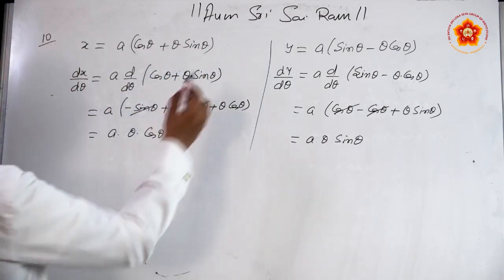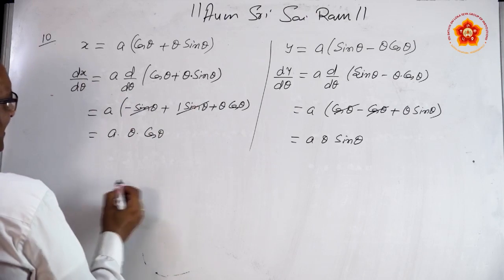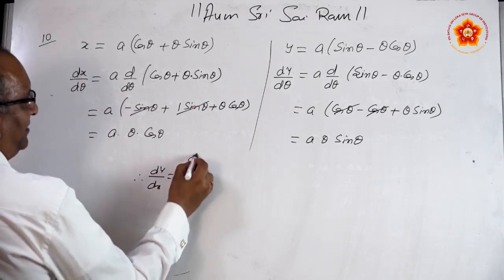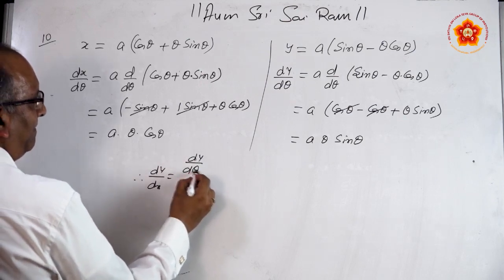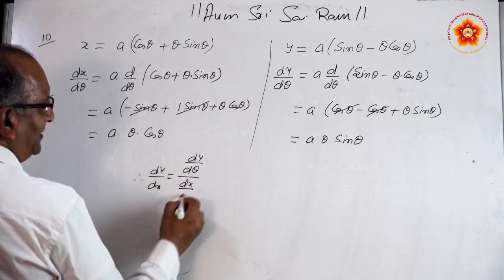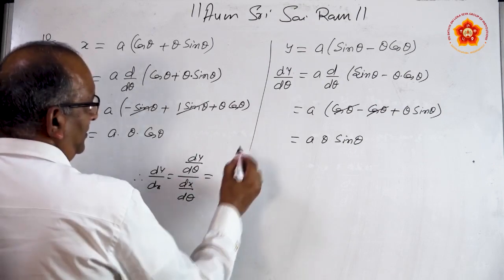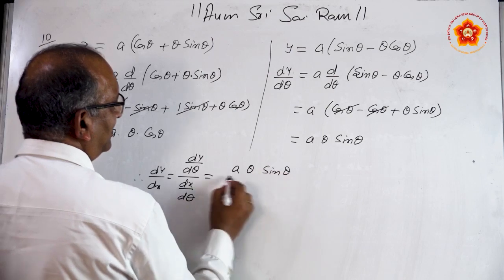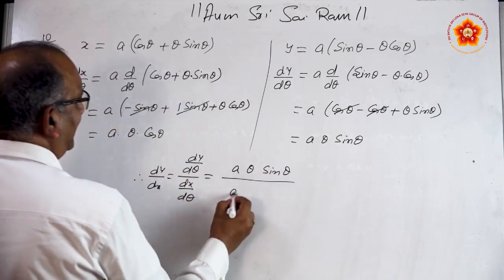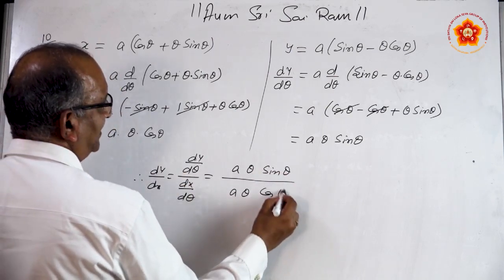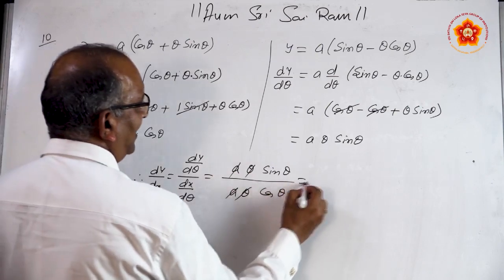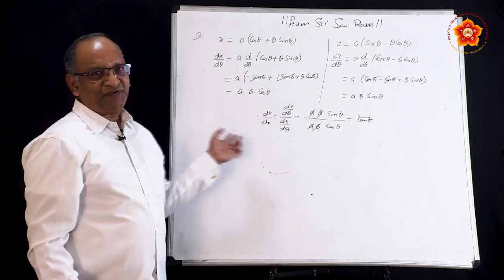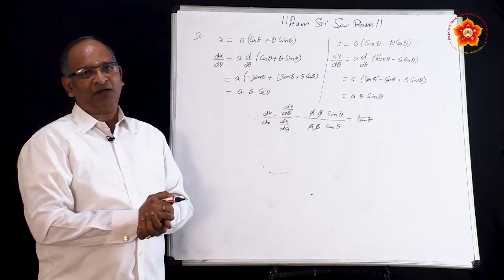We found dy/dθ and dx/dθ. Hence, dy/dx equals dy/dθ divided by dx/dθ. Substituting: it is a·θ·sin θ divided by a·θ·cos θ. A cancels, θ cancels, and the answer is tan θ. So this was quite a simple problem, not very complicated. We will take one more complicated problem and end this session.